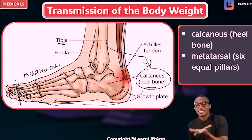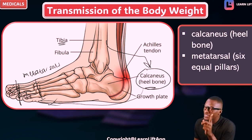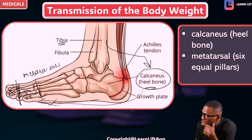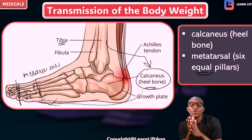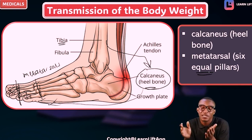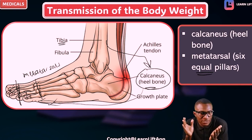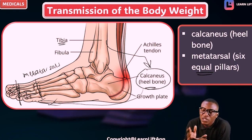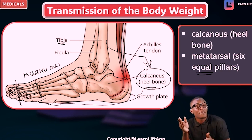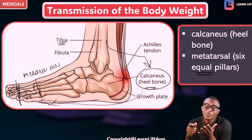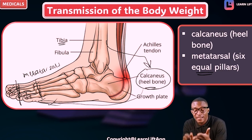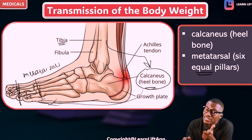You may wonder — the metatarsals are five, so why do we say six pillars of the metatarsals? From our anatomy, the phalanges are 14, metatarsals are five, and tarsals are seven. I will explain why we say six metatarsal pillars.